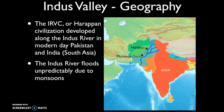The Indus River Valley floods unpredictably due to monsoons. A monsoon is a seasonal wind that affects this region of the Indian Ocean basin. During certain seasons, stronger winds bring more rain into the area, causing the rivers to periodically flood — but this is relatively unpredictable. This makes the Indus River Valley geographically similar to Mesopotamia, where the Tigris and Euphrates rivers also flooded uncontrollably and unpredictably.